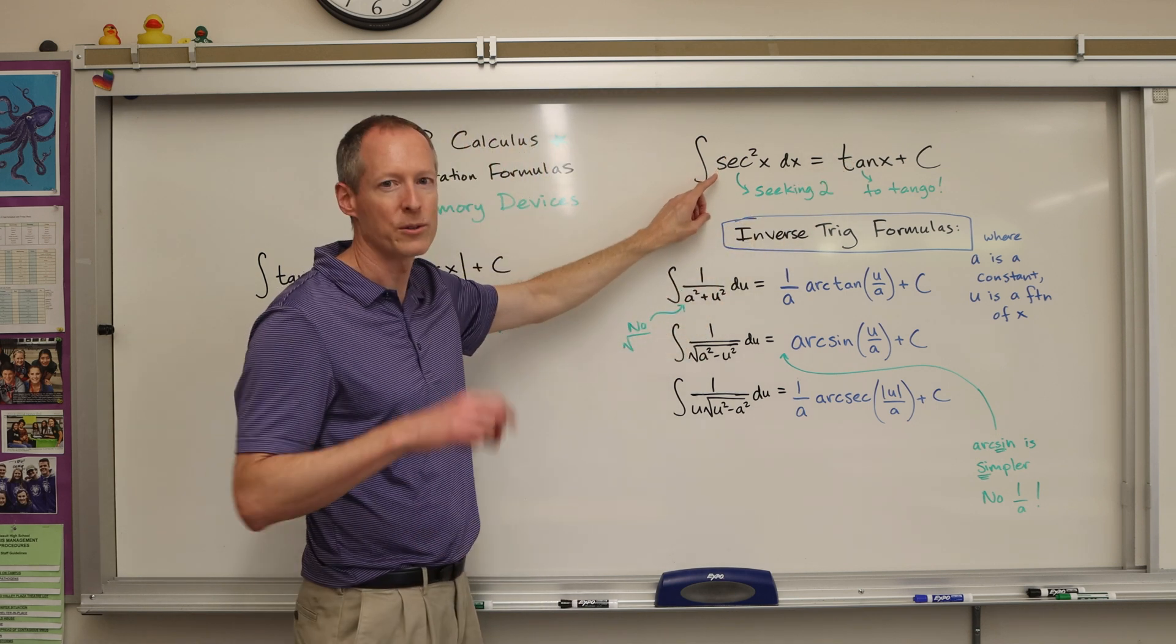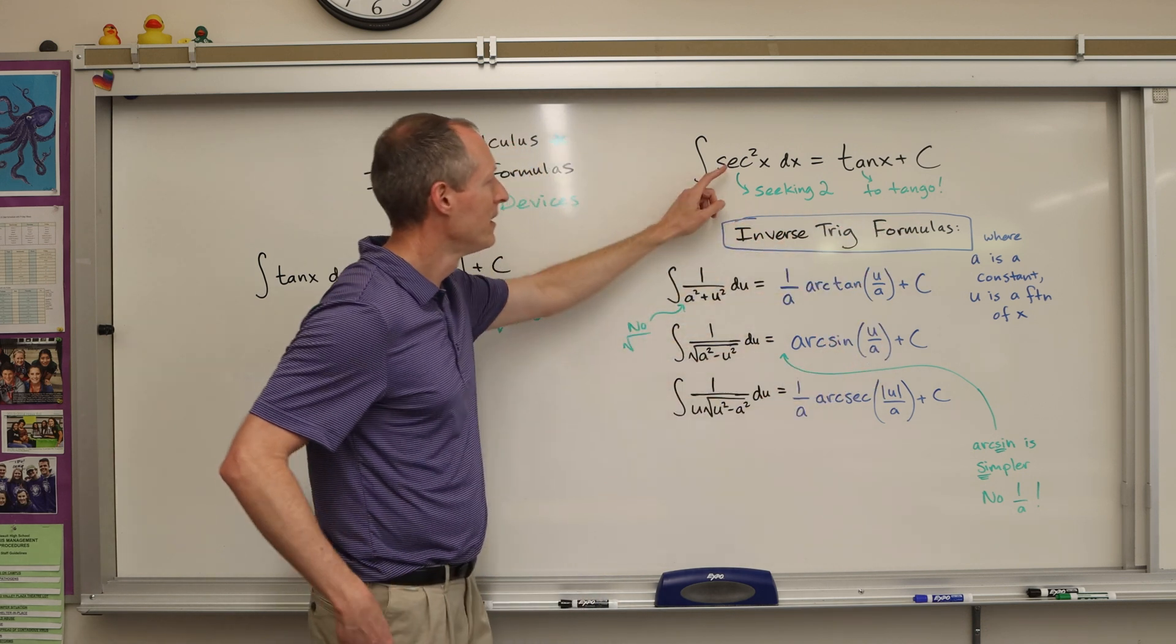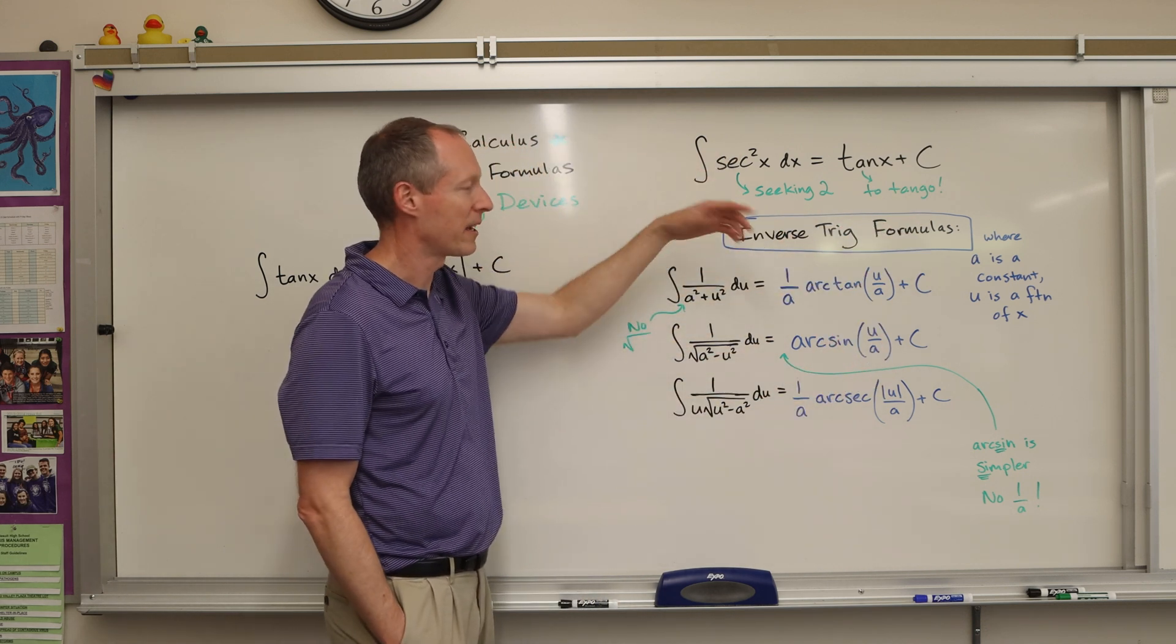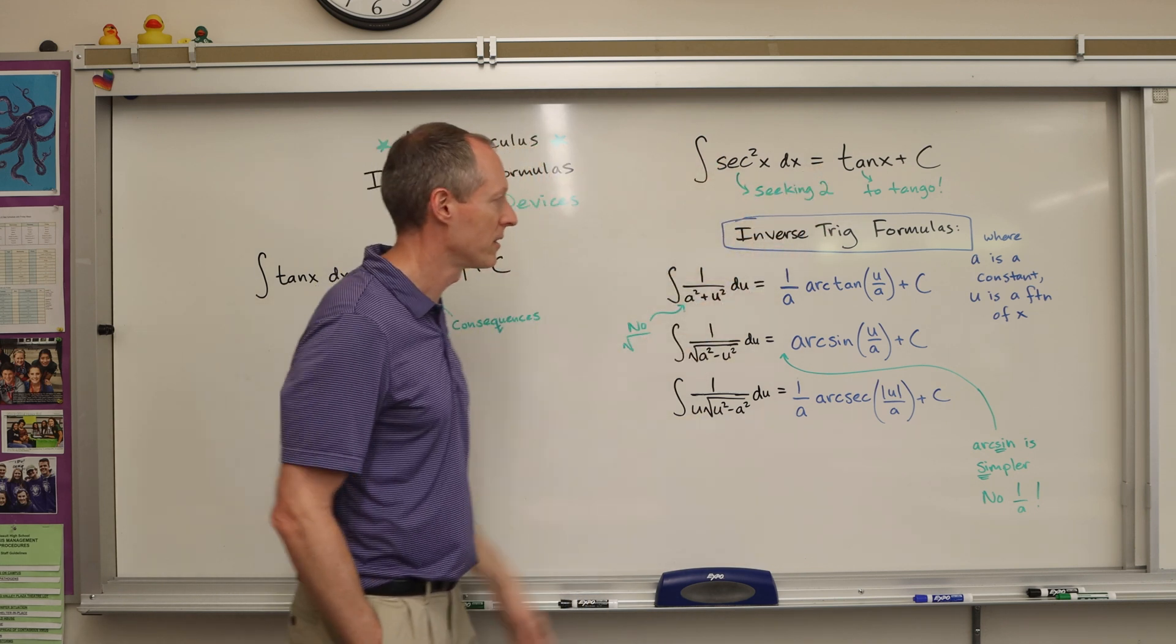So secant squared, oh, you seek two people to tango, the dancing tango. So seeking two to tango, takes two to tango, that expression. So secant squared, the integral of that turns into tangent x.